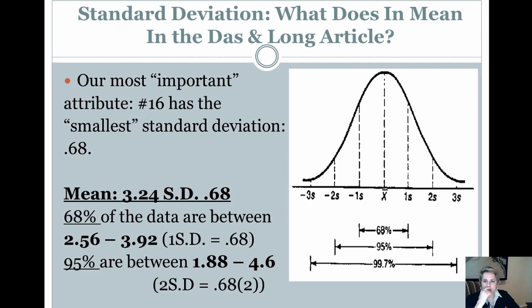Now, what does standard deviation in the Dawson Long article mean? So once again, our most important attribute we know was number 16, essentially interesting topics or interesting questions. It also has the smallest standard deviation, 0.68. So taking, extrapolating what we did earlier to this, what this means is that 68%, over here, of the data are between one standard deviation below and one above. That is 3.24 minus 0.68 and 3.24 plus 0.68, which gives you an interval of 2.56 to 3.92.